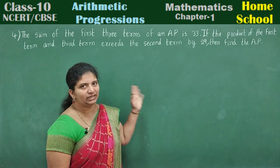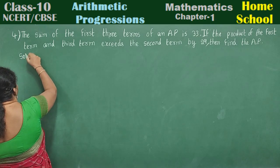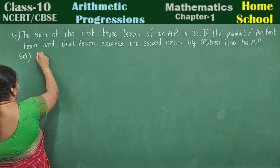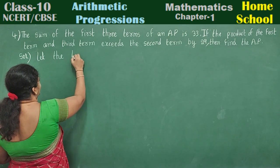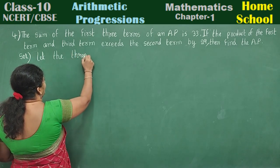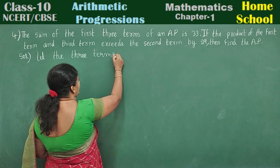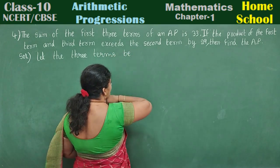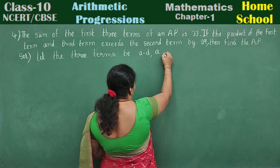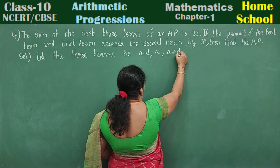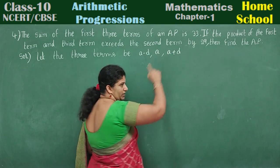Now let's do with three terms. Let us start the solution by taking: let the three terms be A minus D, A, and A plus D — first term, second term, third term.